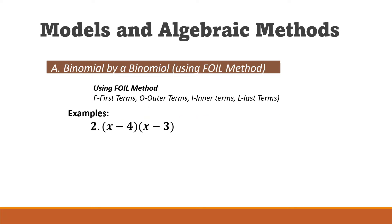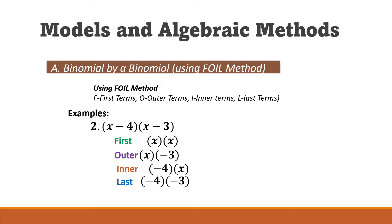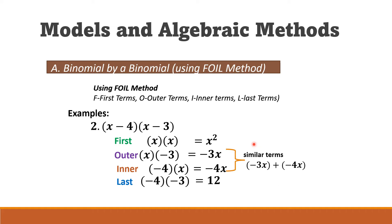The final answer is x squared + 5x + 6. Here is another example: (x − 4)(x − 3). We list down the pairings and multiply: x times x is x squared, x times −3 is −3x, and −4 times x is −4x.